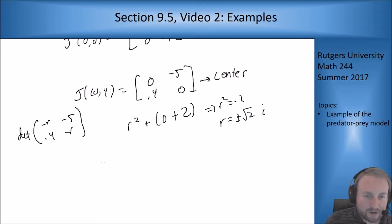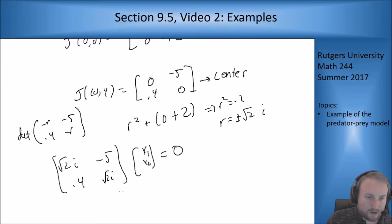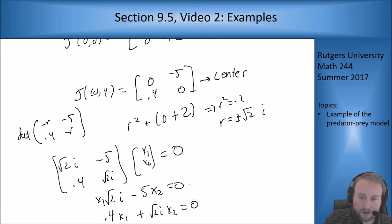Now let's figure out the actual equations. So I get [root 2i, minus 5; 0.4, root 2i] times [x1; x2] equals 0. I'm plugging in minus root 2i, why not? [Minus root 2i, minus 5; 0.4, minus root 2i] times [x1; x2] equals 0, so minus root 2i x1 minus 5 x2 equals 0, and 0.4 x1 plus root 2i x2 equals 0. These equations are going to be redundant.